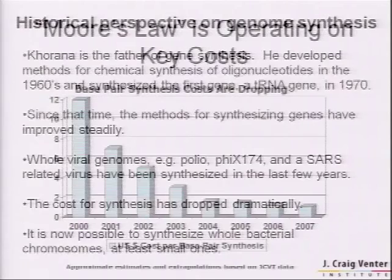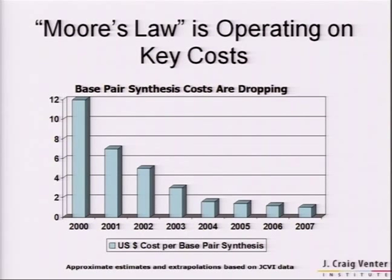Moore's Law seems to be operating. When I became interested in gene synthesis while at Celera, if you wanted to order a gene from a company it was around $12 a base. Now the companies are selling gene-sized pieces of DNA for about 50 or 60 cents a base pair. So you can order up pretty much what you want.